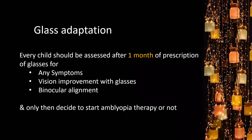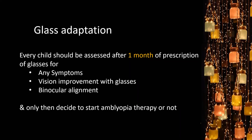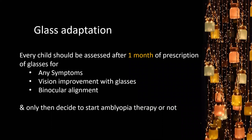Every child should be assessed after one month of glass prescription to check for symptoms (diplopia, asthenopia), verify vision improvement with glasses, and check binocular alignment — ensuring no exophoria or esophoria has been introduced. Amblyopia treatment (patching) should always be started only after one month of glass wear, confirming the child has consistently worn the glasses before initiating patching therapy.